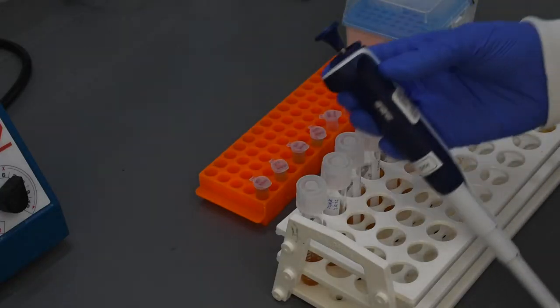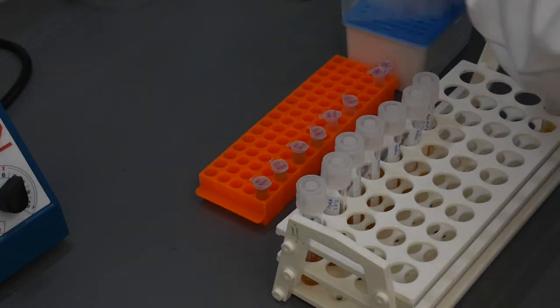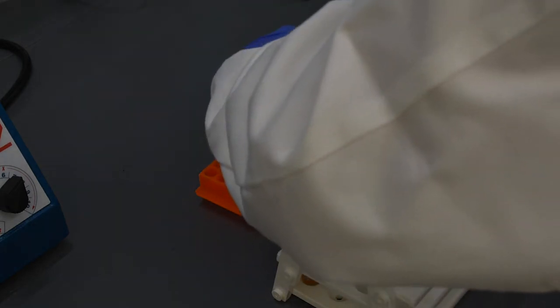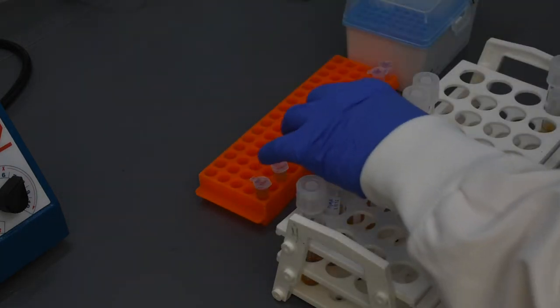After 2 days of growth, your culture broth will appear turbid with cells. Transfer 1.5 ml of broth to 1.5 ml microcentrifuge tubes labeled appropriately.